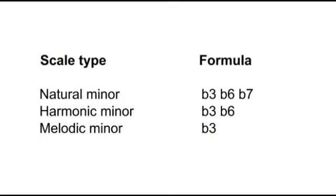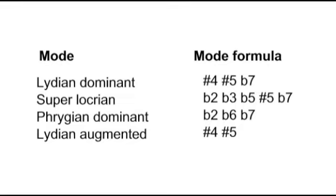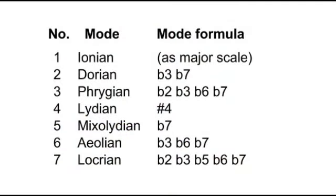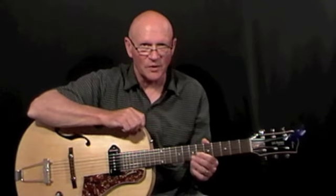Here's a quick description of the process for those who already know their basic theory really well. Take the formula for any basic scale, or mode, or even one of these exotic scales, and note the formula down. We'll use the Dorian mode as an example. Its formula is flat 3, flat 7. Then simply work out how this alters the basic major scale sandwich exercise pattern for each of the seven octave shapes.